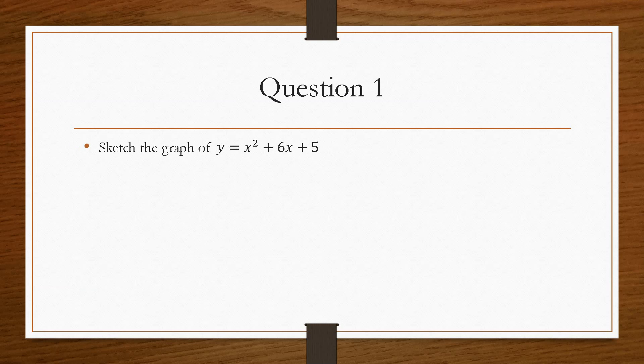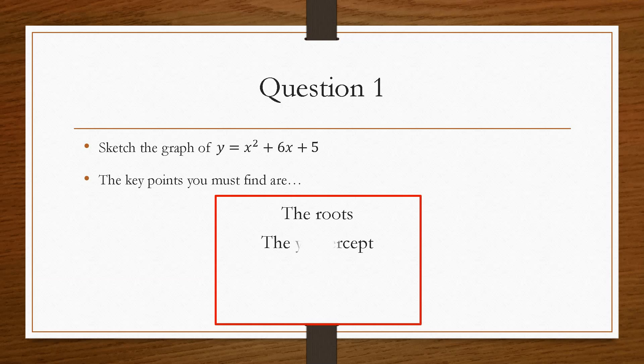So if we take a look at question number one, it asks us to sketch the graph of y equals x squared plus 6x plus 5. So the key points that we have to find are the roots, the y-intercept, the turning point coordinate, and the nature of the turning point.